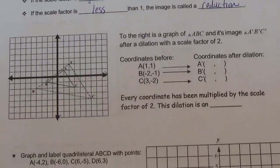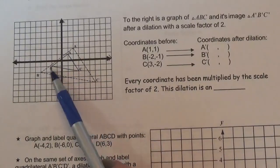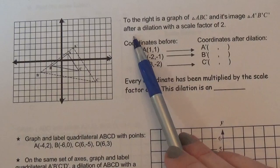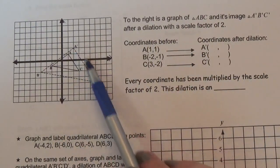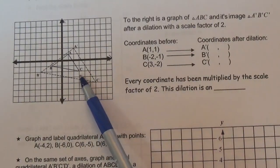To the right is a graph of triangle ABC, see the original here, and its image A prime, B prime, C prime, after a dilation with a scale factor of 2. You can see the new image looks exactly like the original, but obviously is bigger.